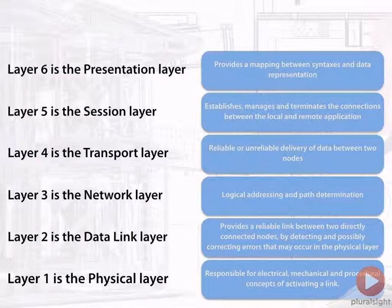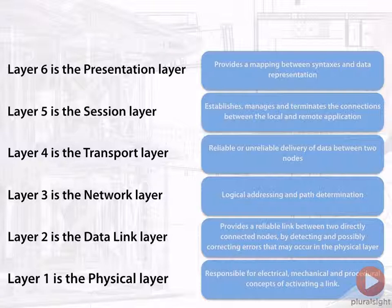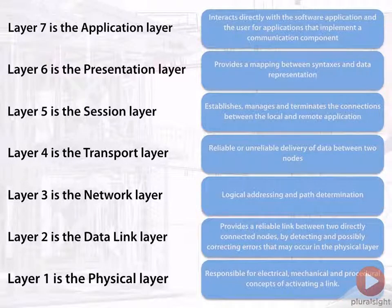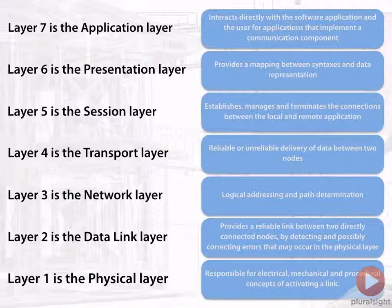Layer six is what we call the presentation layer. This provides a mapping between syntaxes and data representations — conversions between different languages, almost. So it would be things like JPEG or EBCDIC, things along those lines. And then finally, layer seven is the application layer. This layer interacts directly with the application that a user sees, and it allows that application a communication component to talk on the network.